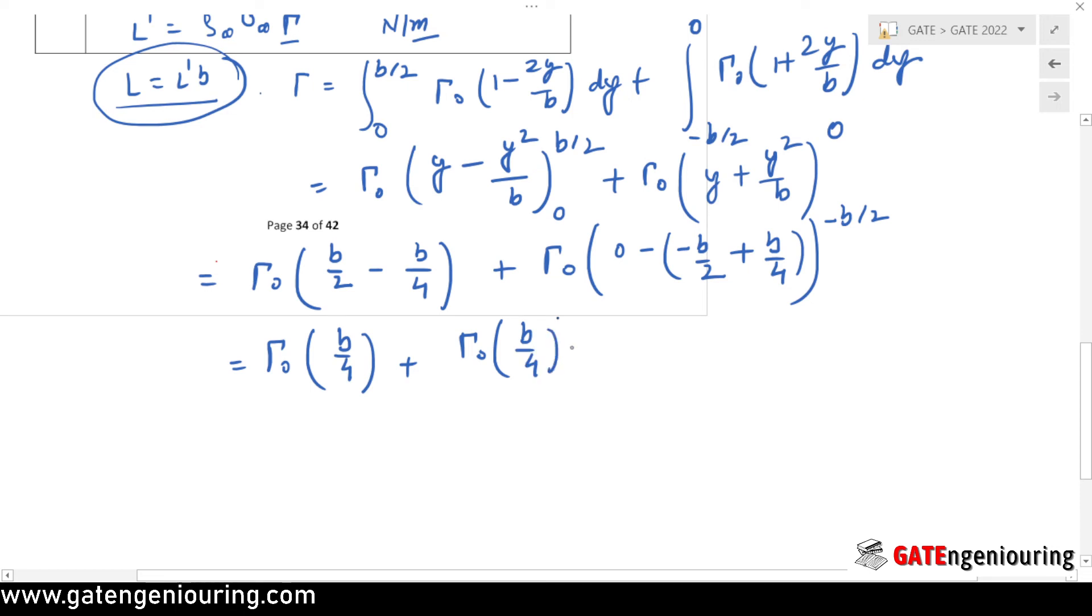It is very simple, so b/4 plus b/4 is b/2. We know the value of Λ₀ and b. Λ₀ is given as 20 and b is 10, so 20 into 10 by 2 is 100 meter square per second, which is the circulation here.